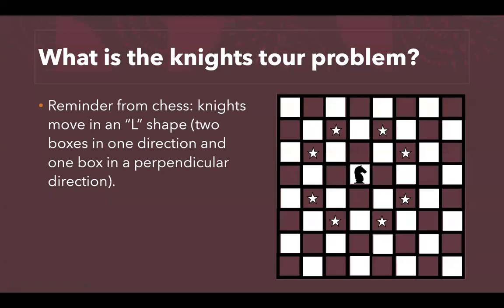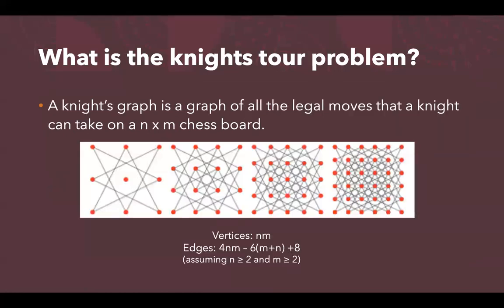We have a knight located at the center, and the stars represent all the potential moves this knight could take. A knight's graph refers to a graph that represents all the legal moves that a knight can take on an M by N chessboard. A knight's graph can be for any dimensions. However, if both N and M are larger than two, there are always N times M vertices, and the edges are 4NM minus 6(M plus N) plus 8.